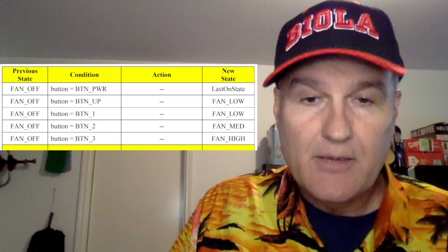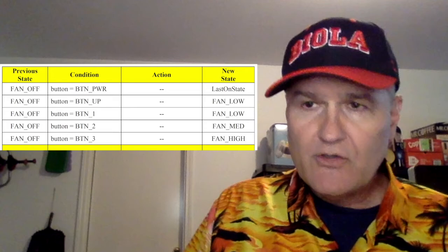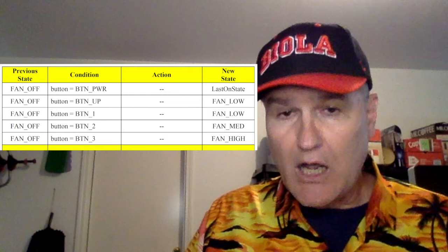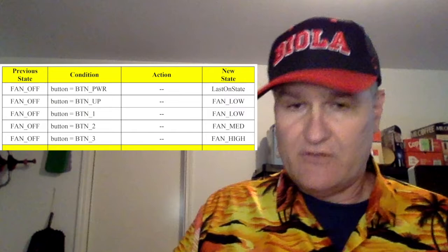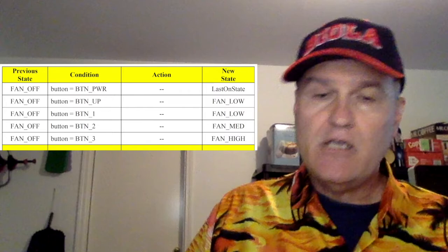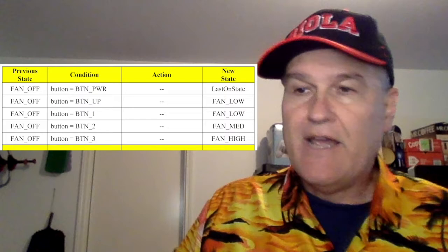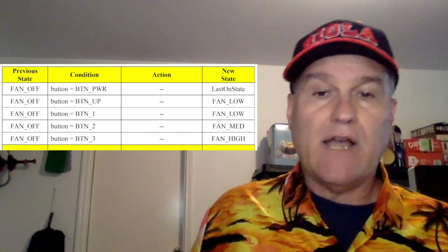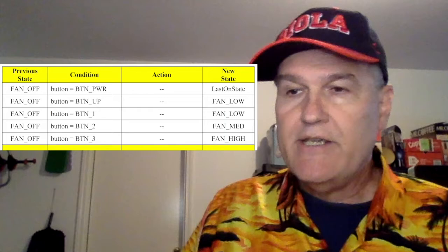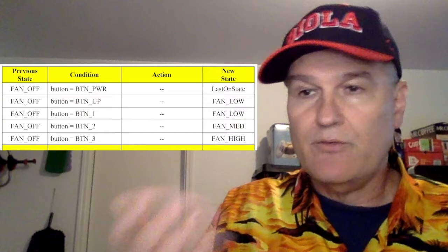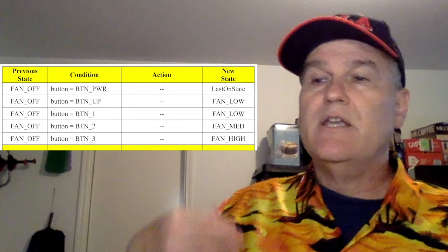All right, so zooming in on fan off, what we see is I've got five cases here. And the first one is, so if the fan is off and you push the power button, it ought to come back on. And notice the new state is last on state, so I've got a variable called last on state, which remembers what it was previously. So the whole idea is if you were in three and hit power, and you hit power again, you come back to three. Now, if that's not true, then if you hit the up button, well, then we're just going to go to low. So the logic there is off is state zero, so up means go one up, which will get you to low. If you hit the one button, it'll just go right to the low speed. Hitting two will go to the medium speed, and hitting three will go to the high speed.